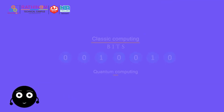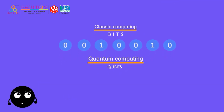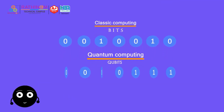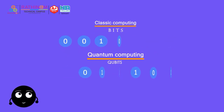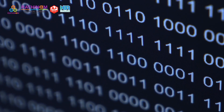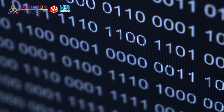Quantum bits, also known as qubits. Quantum computing uses qubits instead of traditional bits. Unlike regular bits that are either 0 or 1, qubits can exist in multiple states simultaneously, thanks to superposition.